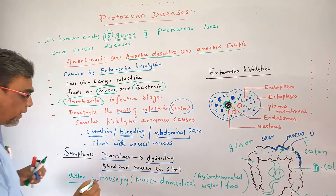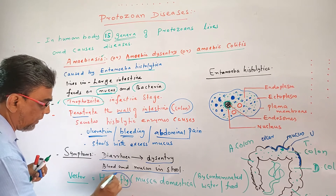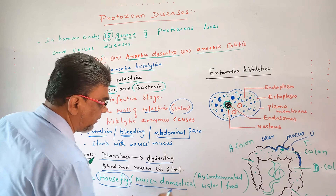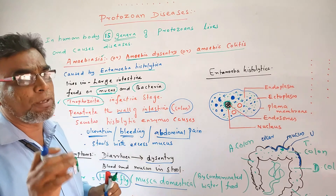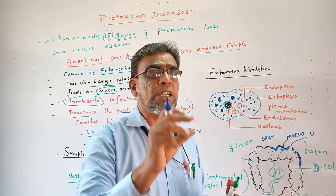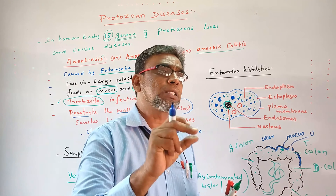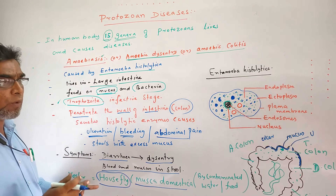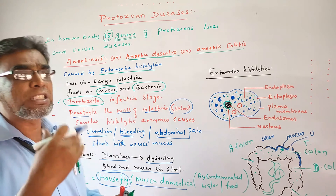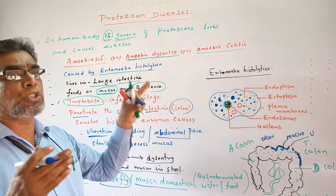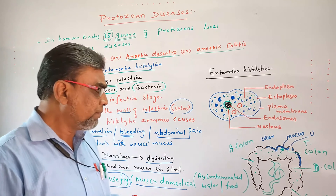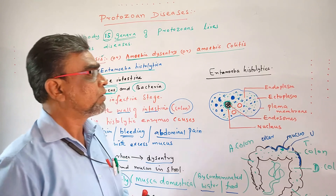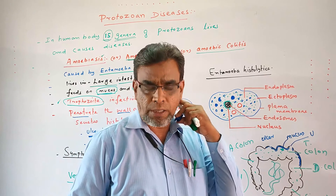The vector of amebiosis is the housefly. The scientific name of the housefly is Musca domestica. This housefly acts as the vector and transmits Entamoeba histolytica into the body through contaminated water and food.